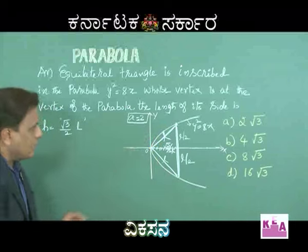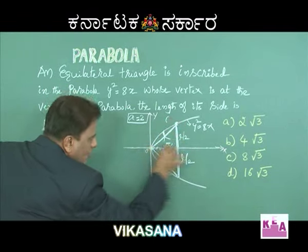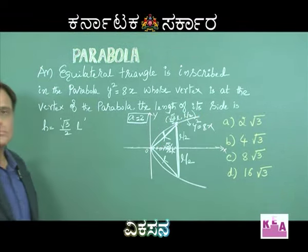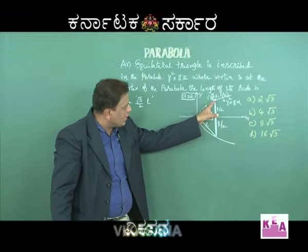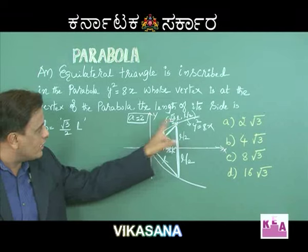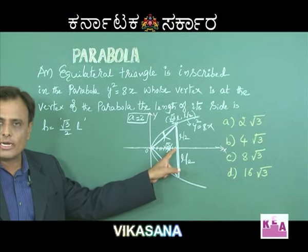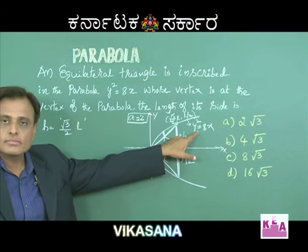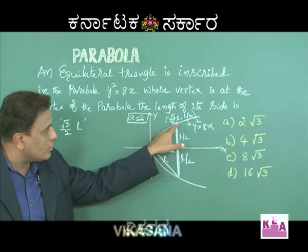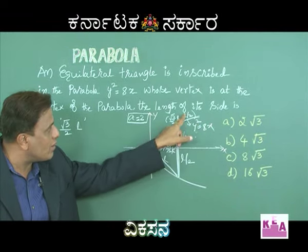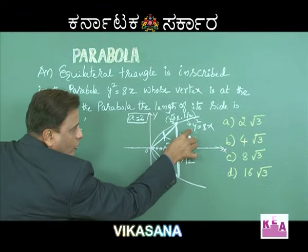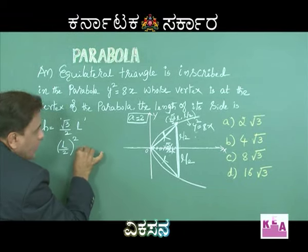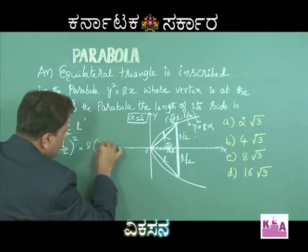For the endpoint of the triangle, the x-coordinate equals the height of the equilateral triangle, which is (√3/2)L, and the y-coordinate is L/2. Since this point lies on the parabola, its coordinates must satisfy the equation y² = 8x. Substituting: in place of y we put L/2, and in place of x we put (√3/2)L.